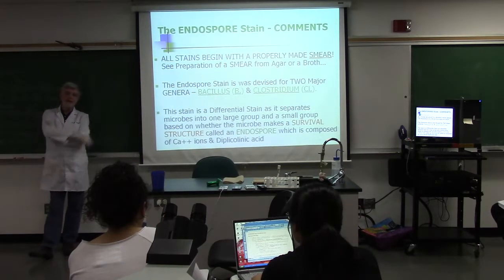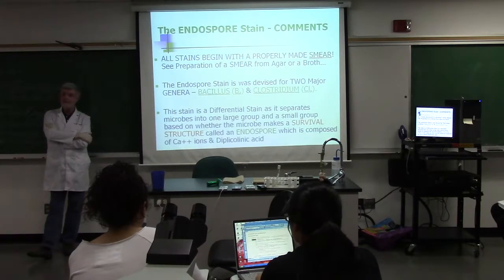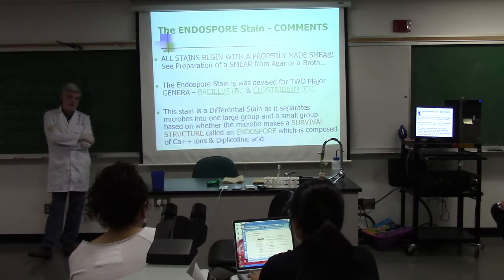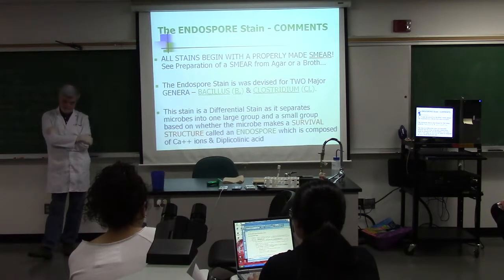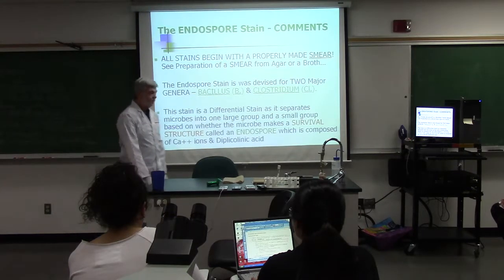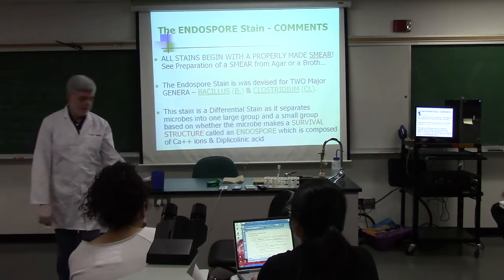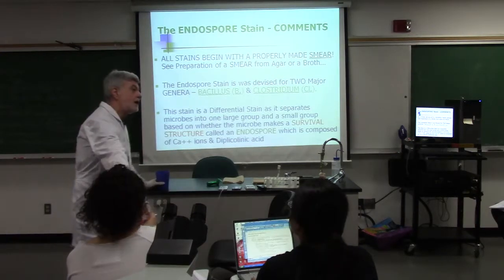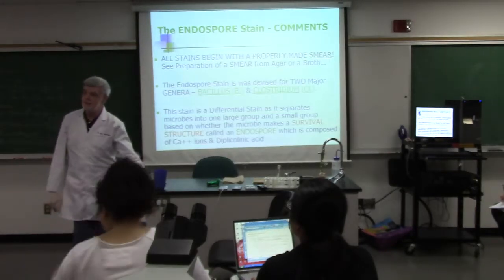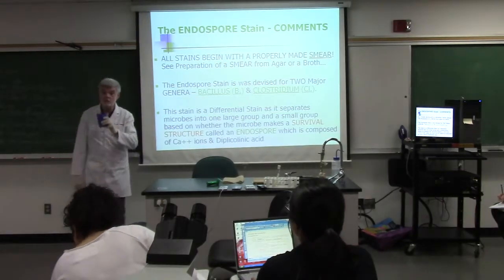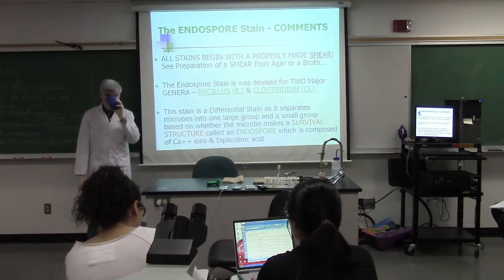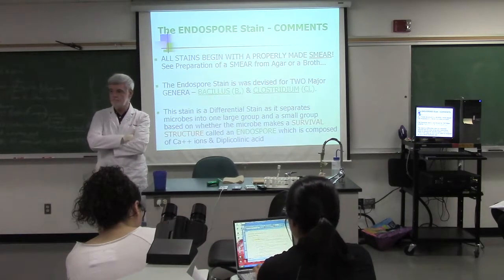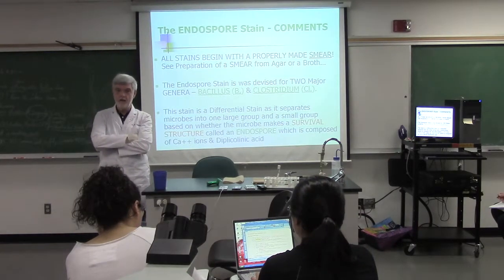The chemistry behind the endospore stain is calcium ions. Since cotton has calcium ions, if you drop malachite green on anything with cotton in it, it will never come out. The chemistry behind the gram stain is thickness of the cell wall; the chemistry behind the acid-fast stain is lipids; and the chemistry behind the endospore stain is calcium ions — specifically in the spore coat of the endospore.